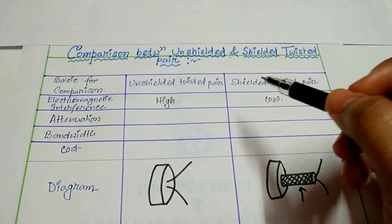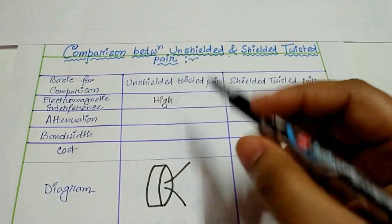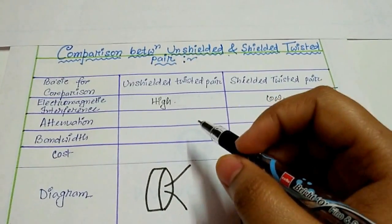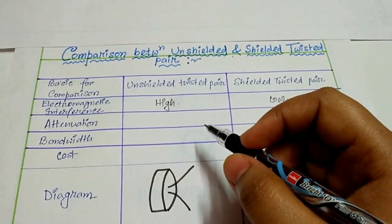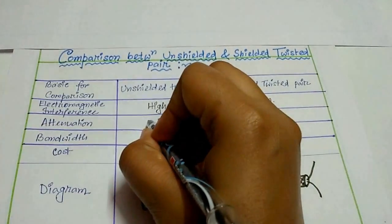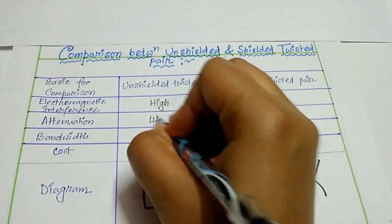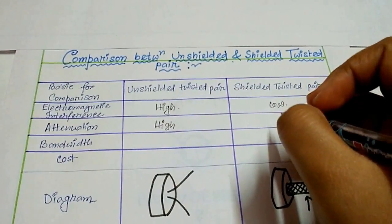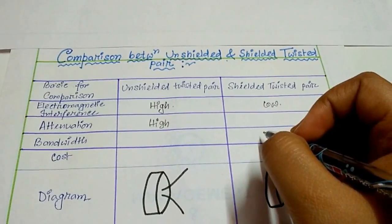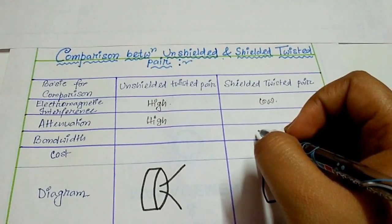In the basis of attenuation, unshielded twisted pair is high and shielded twisted pair is low.